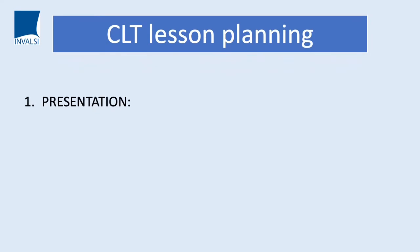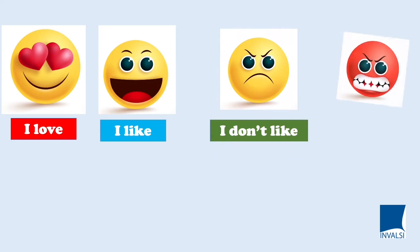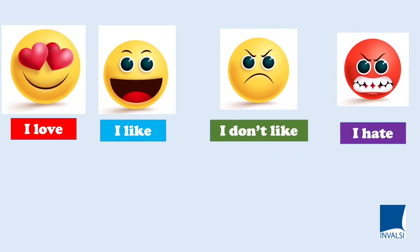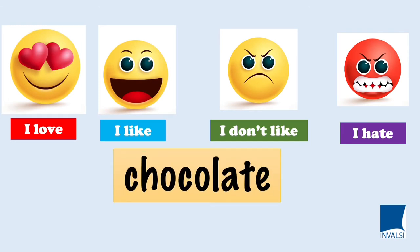The first part of the lesson is presentation, which needs a clear context and illustrates meaning, leading to practice activities. For example, presenting verbs of preference such as 'I love,' 'I like,' 'I don't like,' and 'I hate.' We can use emojis — very familiar to young people — to represent different grades of preference. We model pronunciation and immediately go to examples: 'Giovanni, chocolate.' Giovanni says 'I love chocolate.' Sofia: 'I like chocolate.' Diego: 'I don't like chocolate.' We're already communicating ideas at the presentation stage.